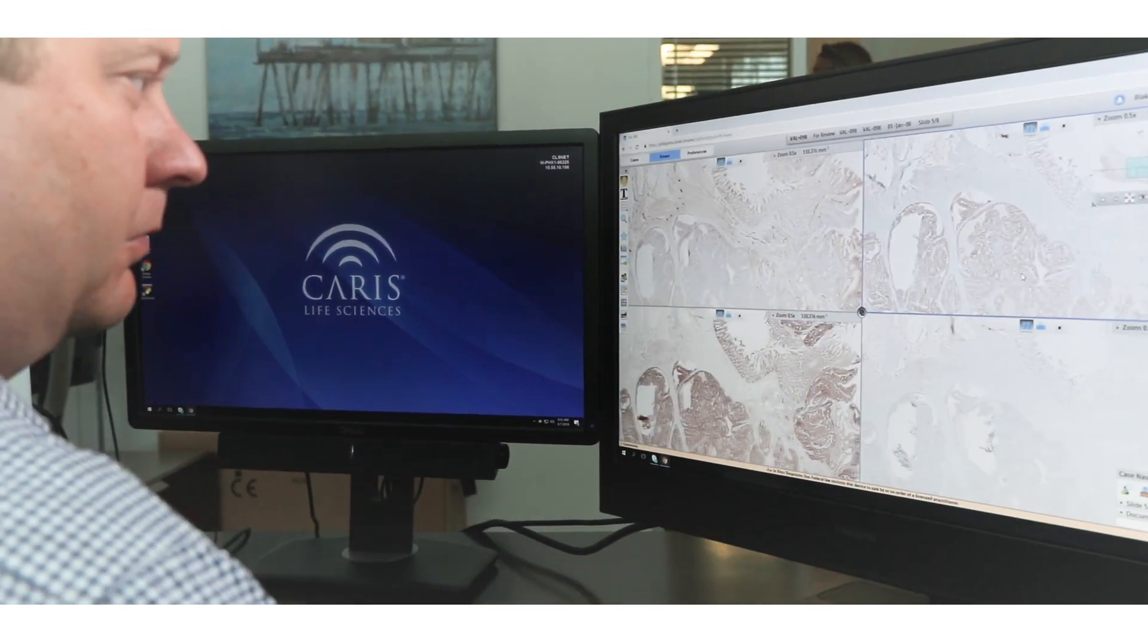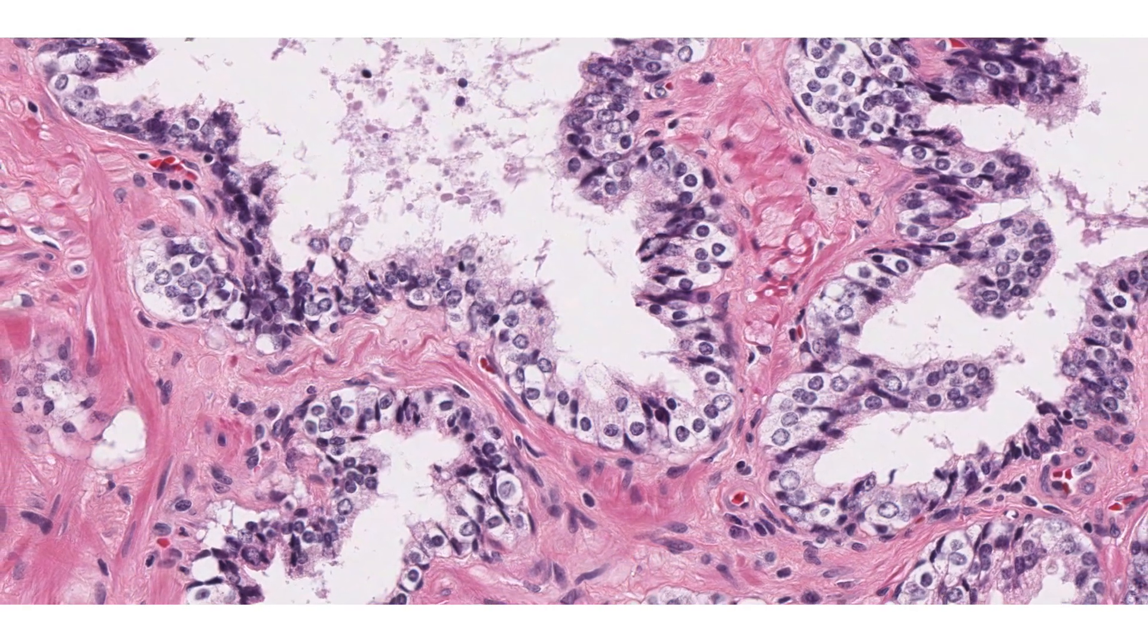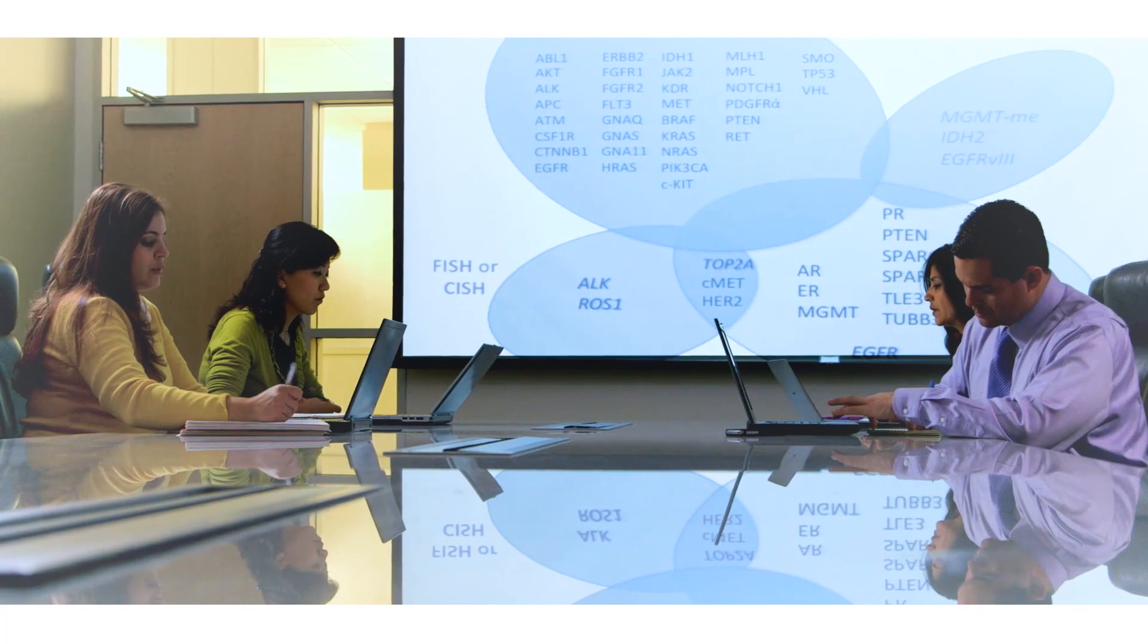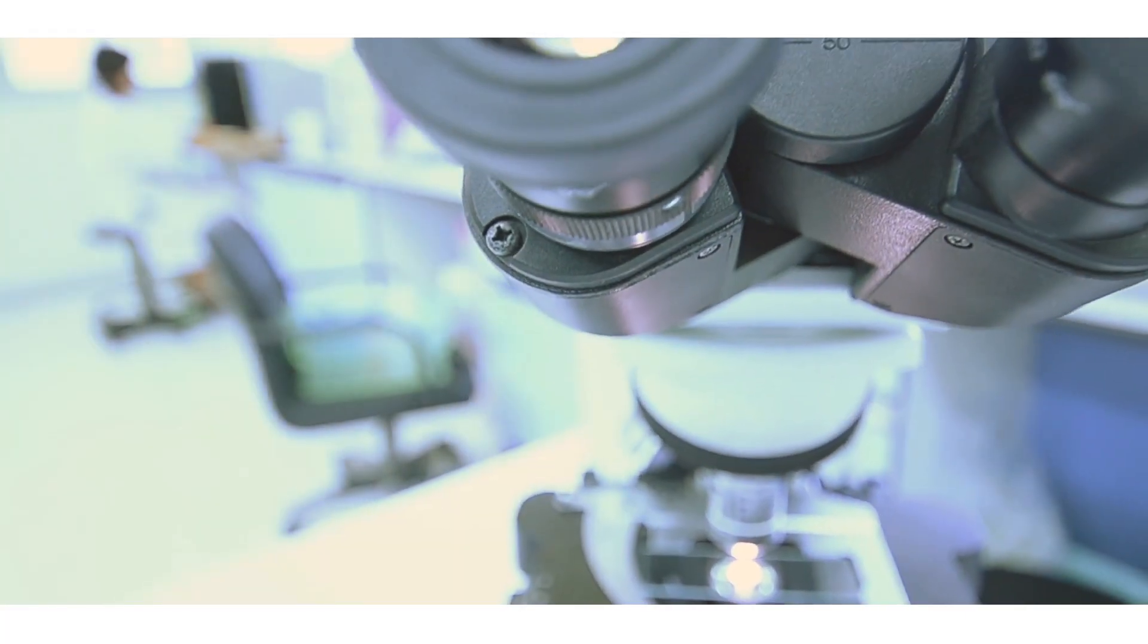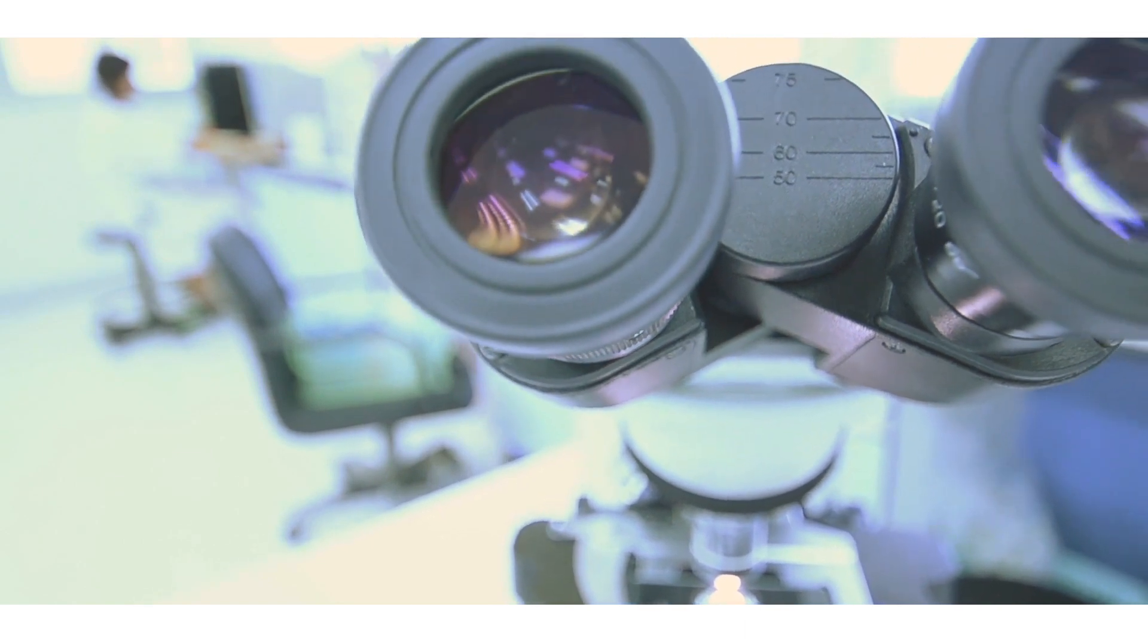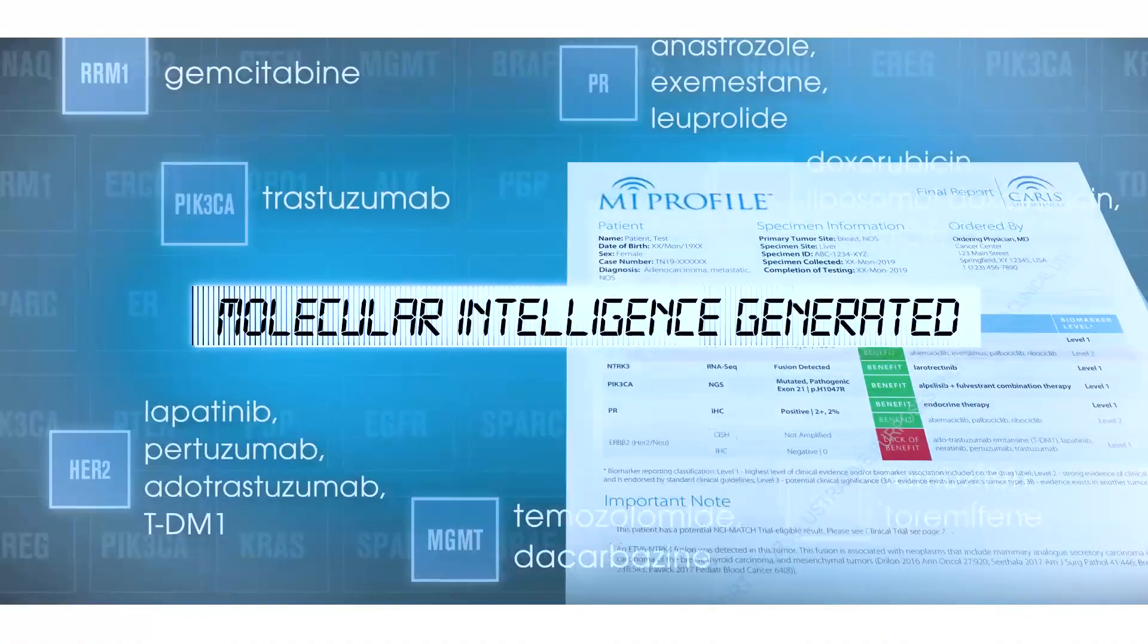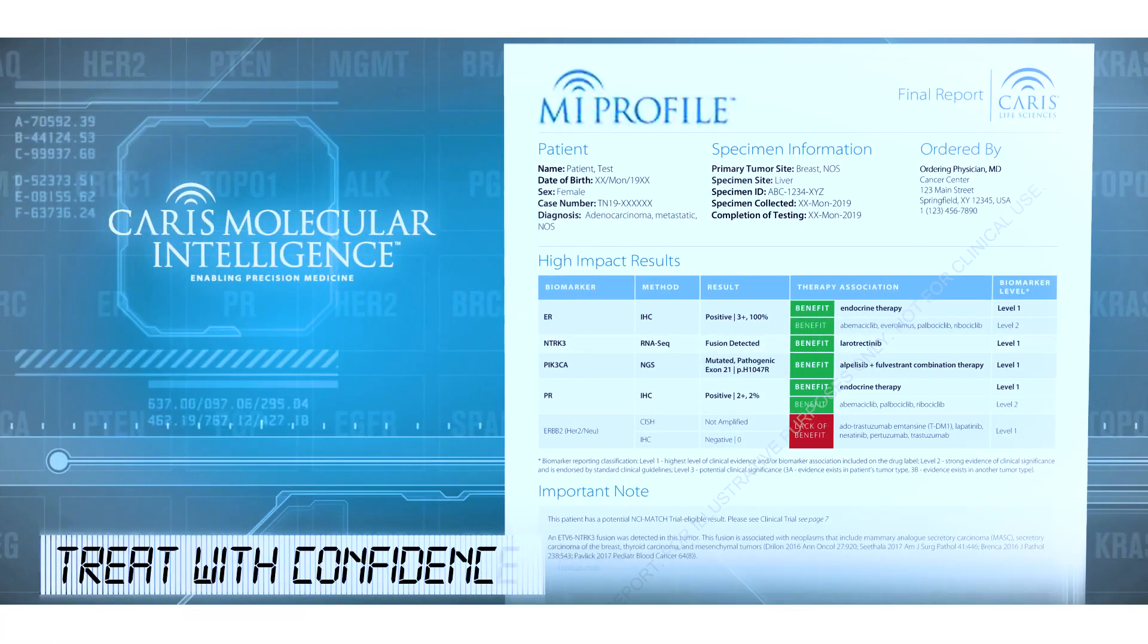And that's then integrated together and reviewed by our pathologists. Our pathologists are then looking at the complete case with all of the molecular information, all of the protein IHC information, all of the case history notes, and everything that we know about this to ensure that we are making the proper designation for drugs that are more likely to be effective versus drugs that will be less likely to be effective. At the end of that, they're going to sign off on that entire report, and then we will deliver the report to the physician to aid in patient care.